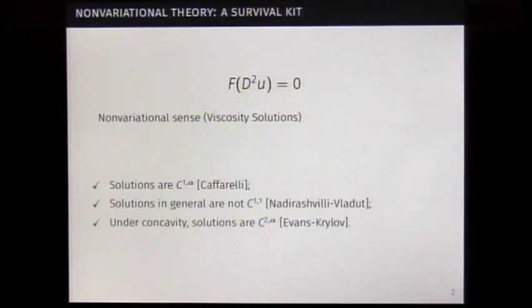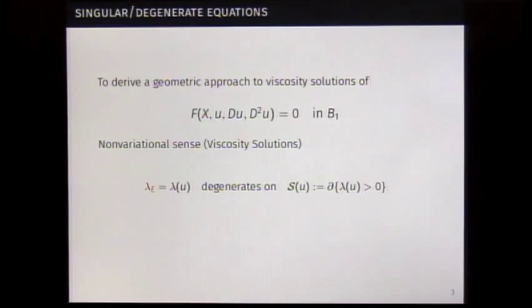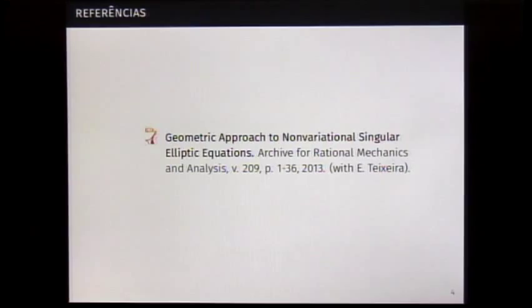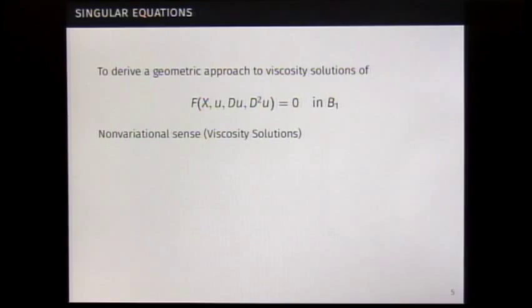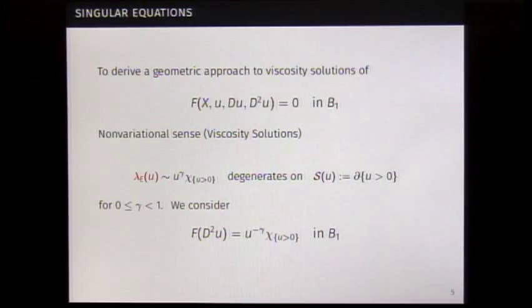Here we treat some general equations where the elliptic constants degenerate on that singular set. In first work with Teixeira, we consider the following class of equations, which means that the elliptic constant or elliptic condition degenerates in that order. And the singular set turns out to be that set, the boundary of the positive set. Gamma here is considered between 0 and 1.